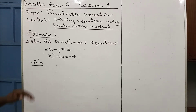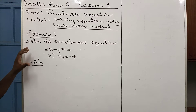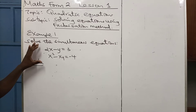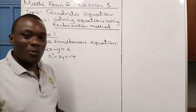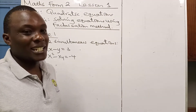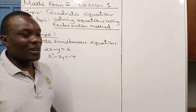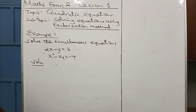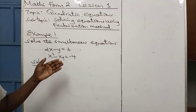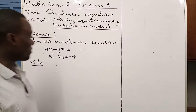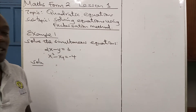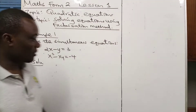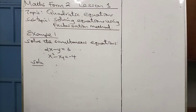Now, remember: when you have two different equations — one being a linear equation and the other a quadratic — you cannot use the elimination method; it is not possible. So I prefer using the substitution method at the first level.